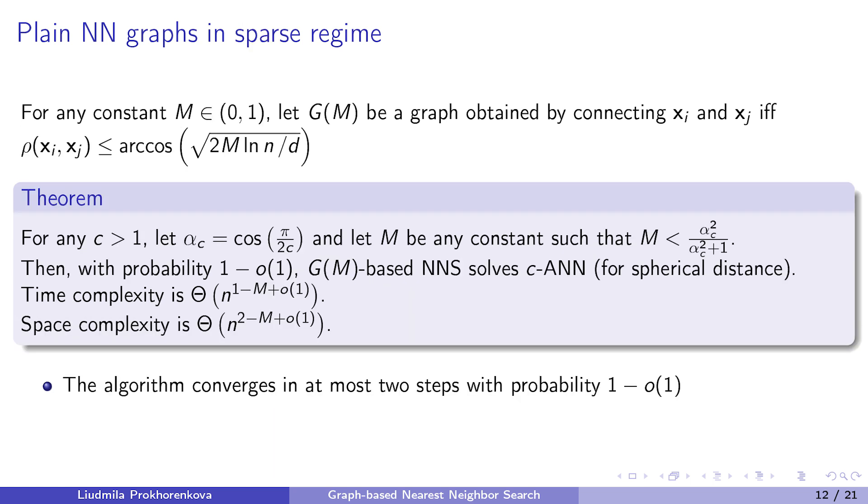In the sparse regime, such graph-based algorithms cannot find the exact nearest neighbor in sublinear time. Therefore, the guarantees are given for the c-approximate nearest neighbor search. The time complexity grows as n to some power which is smaller than 1 and is defined by the constant c. Interestingly, in the sparse regime on uniform data sets, the algorithm converges in at most two steps with high probability. So long edges are not needed. However, in practice the datasets are not uniform and many graph-based algorithms add long edges to proximity graphs in order to speed up the search at the early steps of the algorithm.